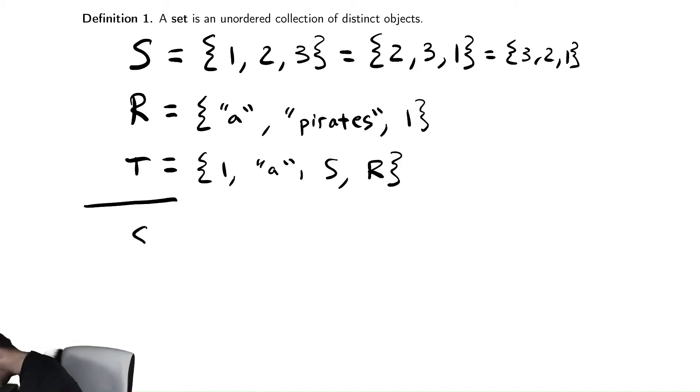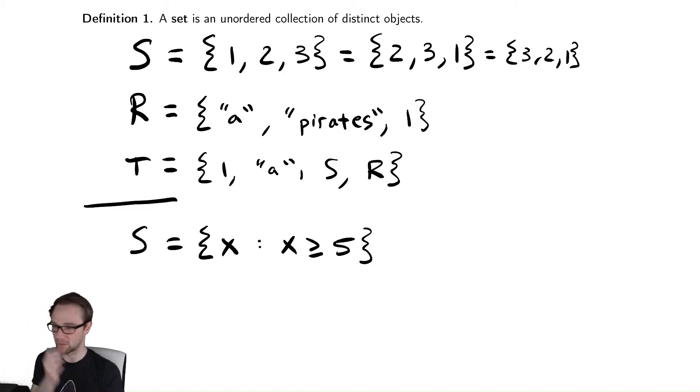you can sort of give a formula describing the set. So I could say S equals the set of x such that x is greater than or equal to 5. That colon is read as the word such that. And this is the set of all x that are greater than or equal to 5. However,